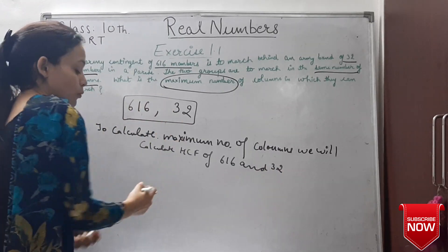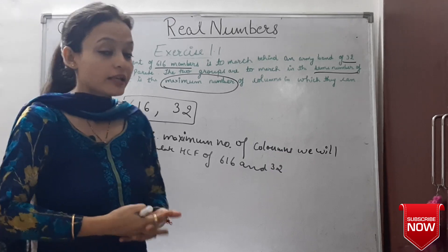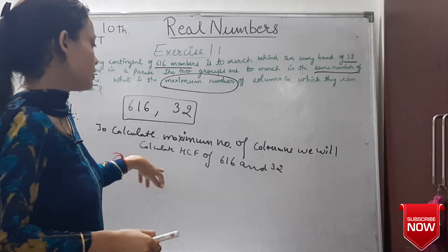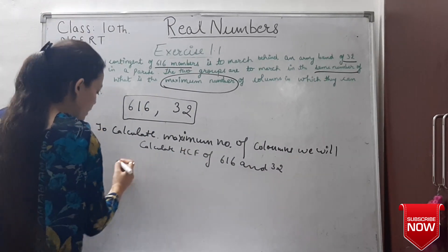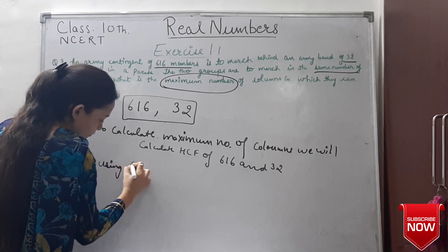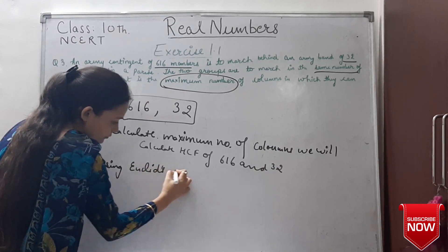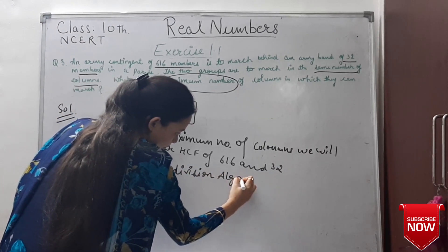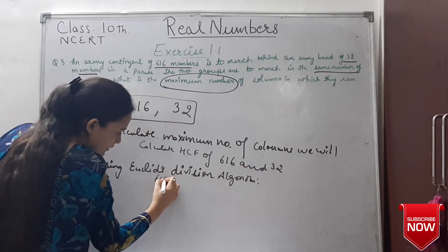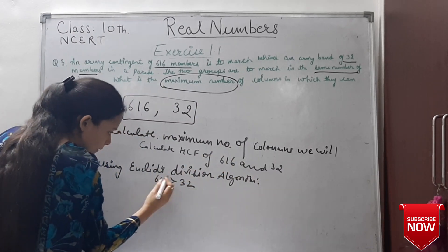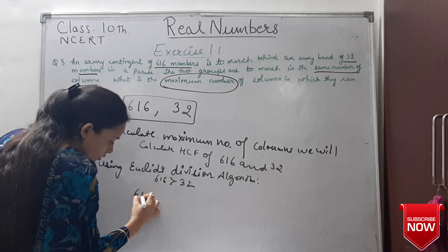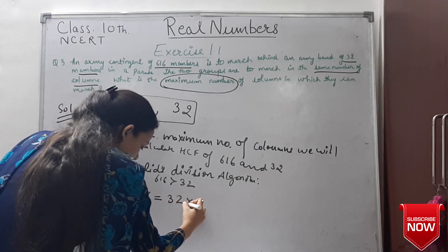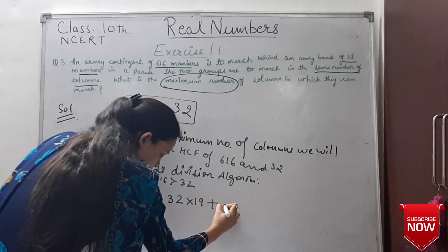Now, as we have seen in the previous video, we will use Euclid's Division Lemma or algorithm to calculate the HCF. Using Euclid's division algorithm — 606 is greater than 32. So when we apply Euclid's division algorithm, we divide 606 by 32: 32 multiplied by 19 gives 608, so the remainder is 8.